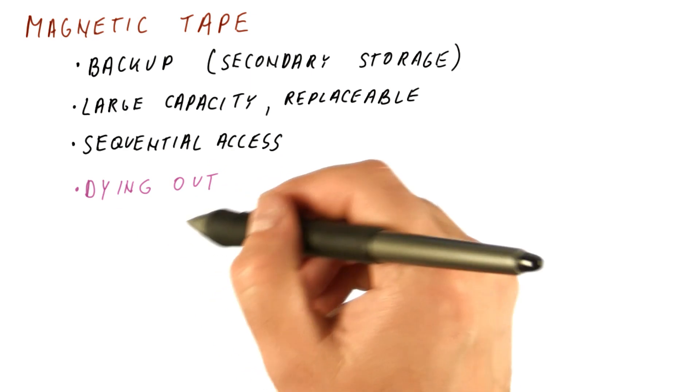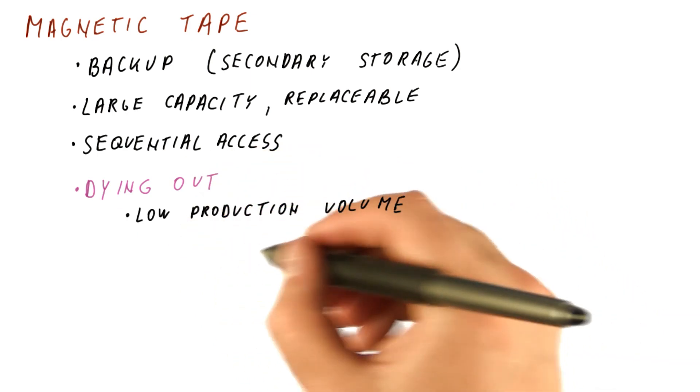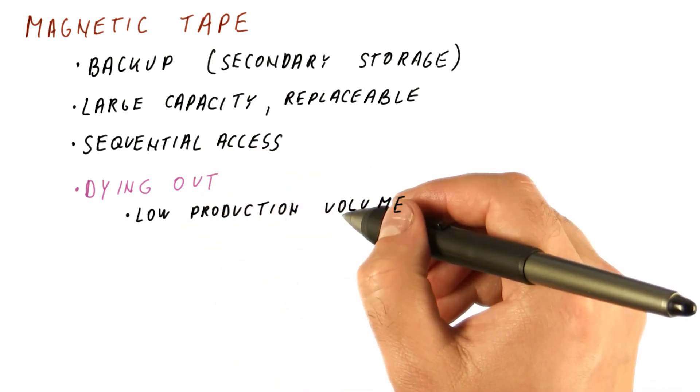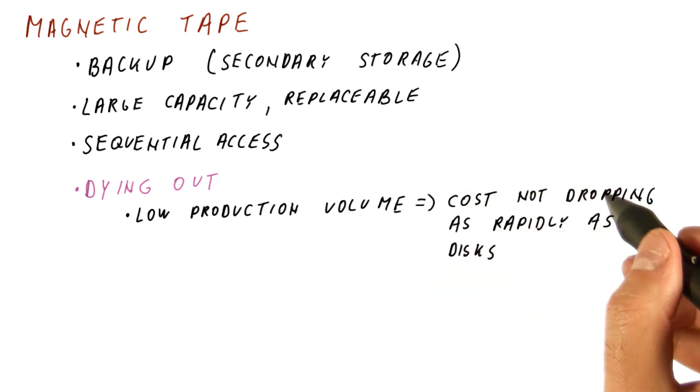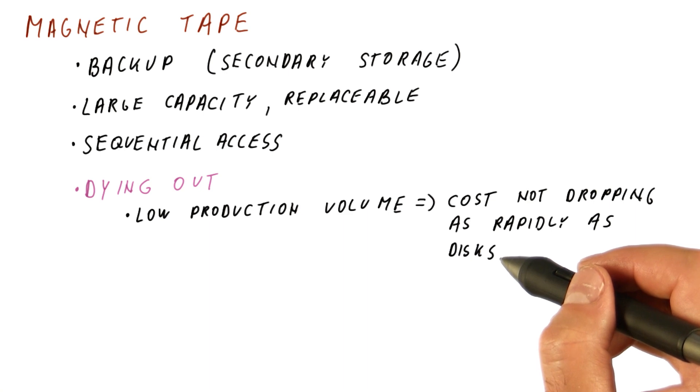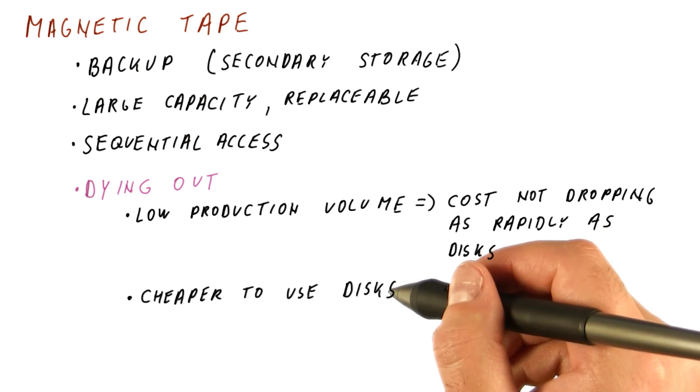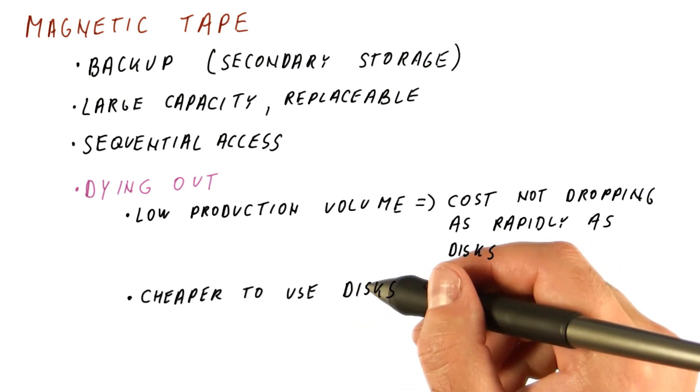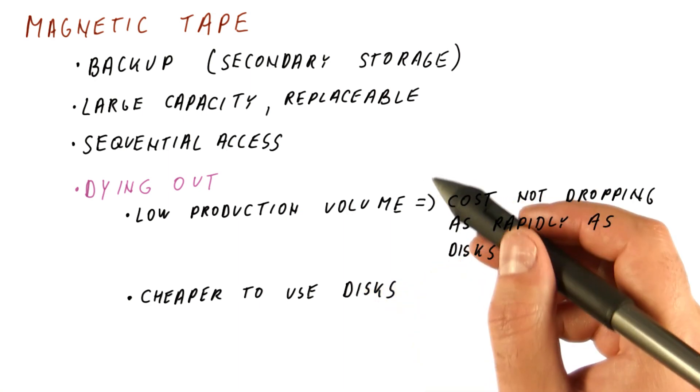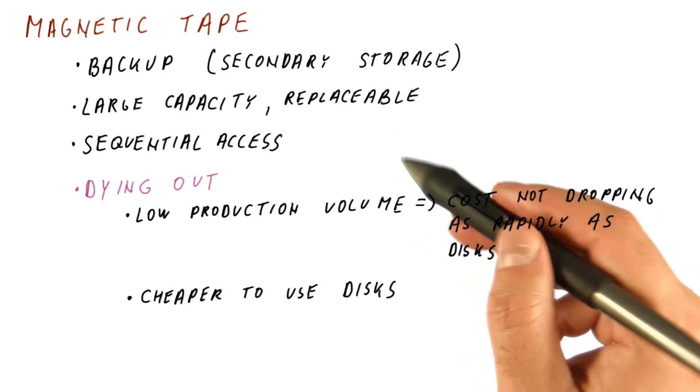Tapes are slowly dying out, mainly because they have a low production volume, because not many people actually use tape. So the cost of tapes is not dropping as rapidly as the cost of disks, which have much more mass production, so their cost gets cheaper over time. And at this point, it's cheaper to buy an entire hard drive together with all the motors and the head assembly and the built-in electronics for it, than to buy some tape and the machine that will read it.